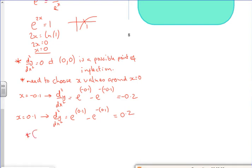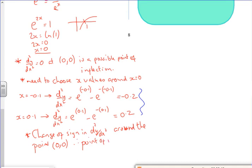Right, so I've got a change of sign in d²y/dx² around the point 0 comma 0. Therefore, now because of this change in sign here, because of that, that is massively important. That makes it a point of inflection. Therefore, point of inflection there.